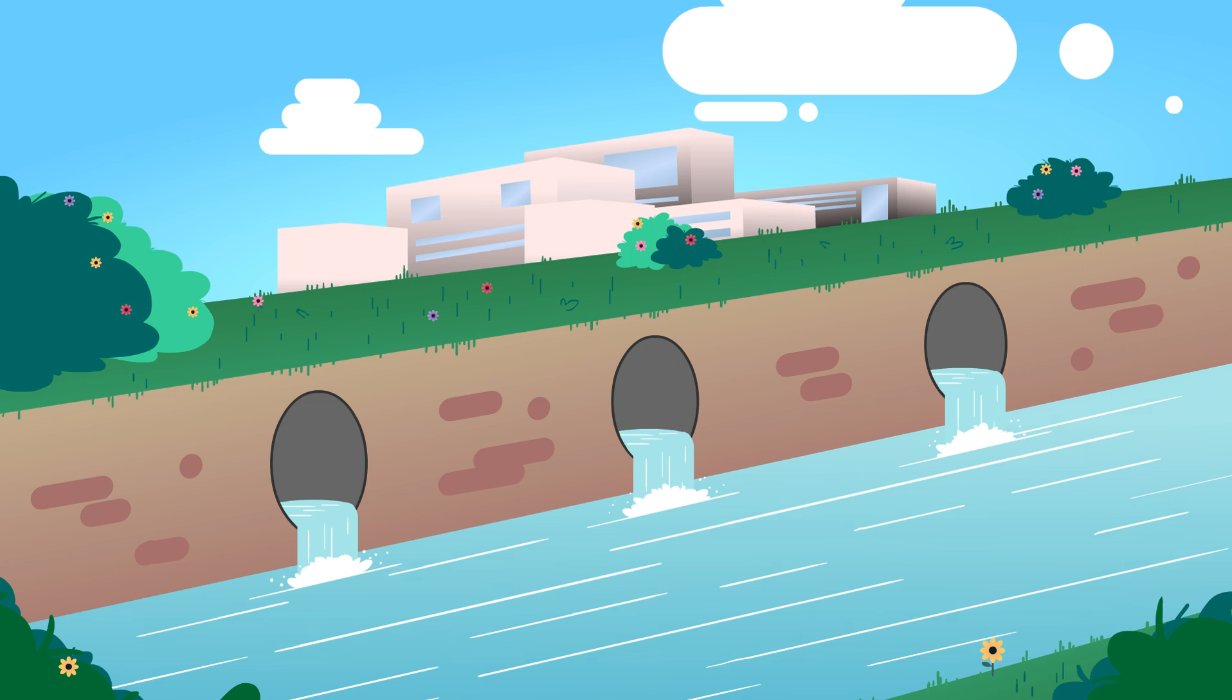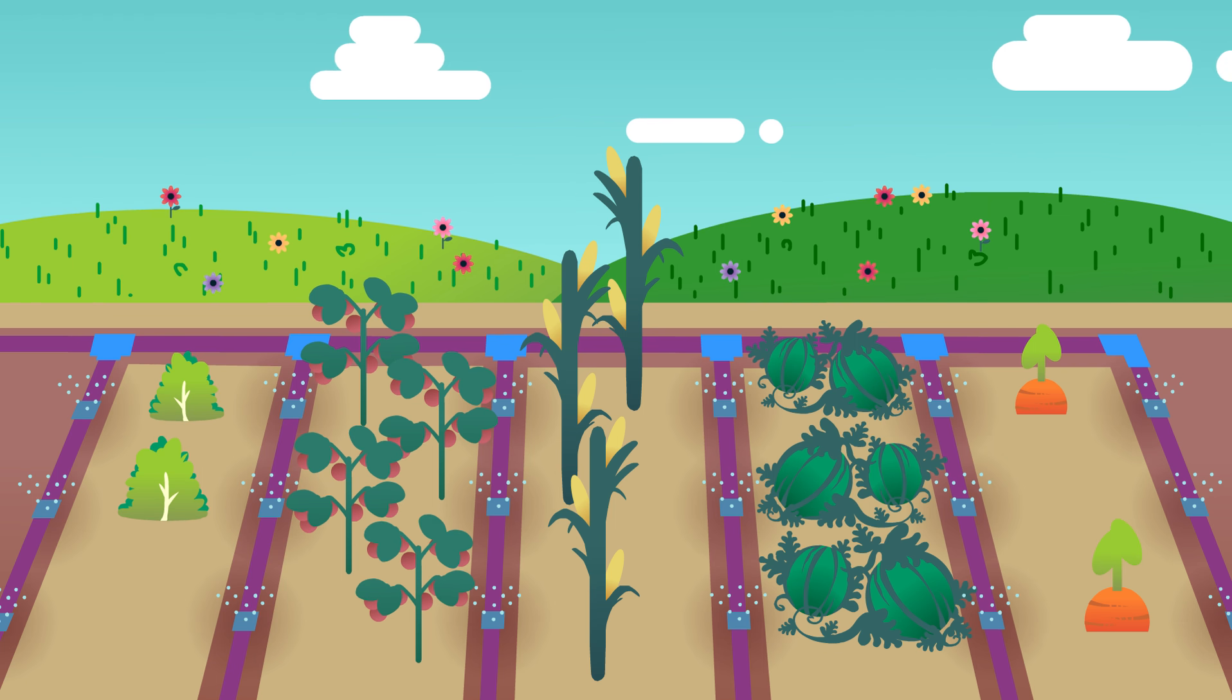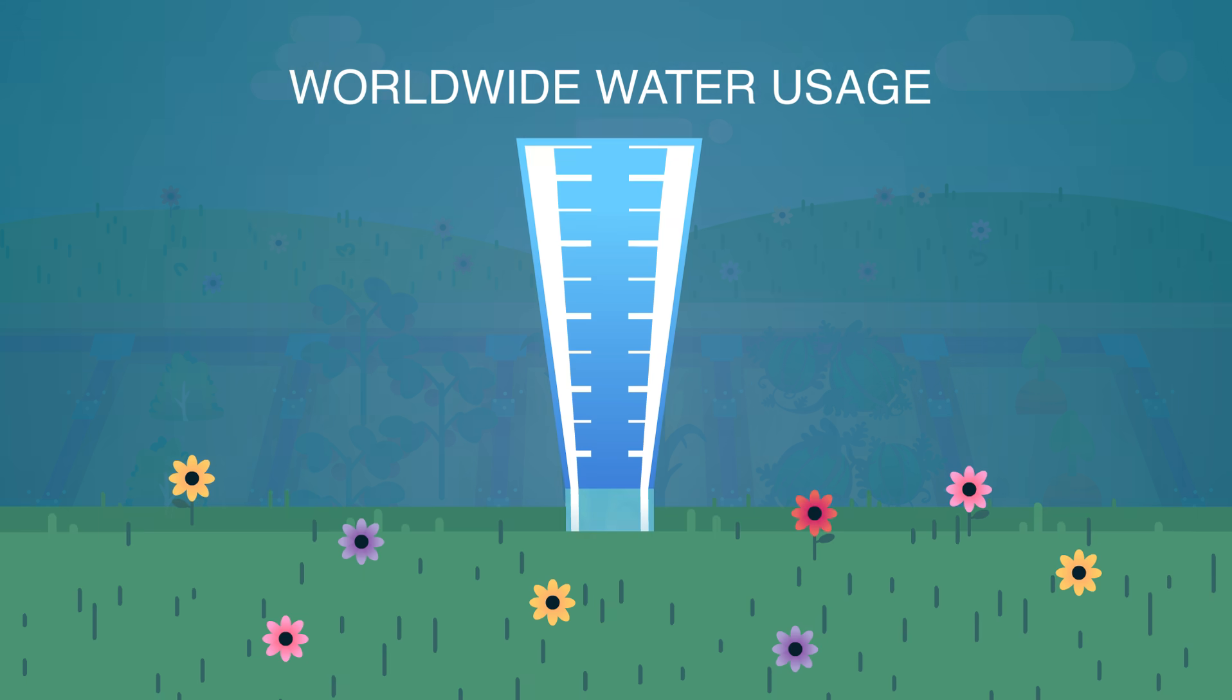It has traveled through treatment plants and been cleaned. Regardless of where water comes from, most of the water we use from the water cycle is used to grow food.